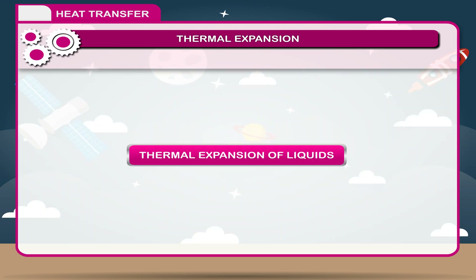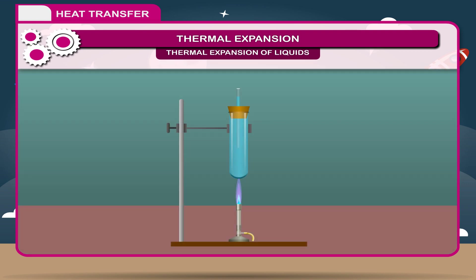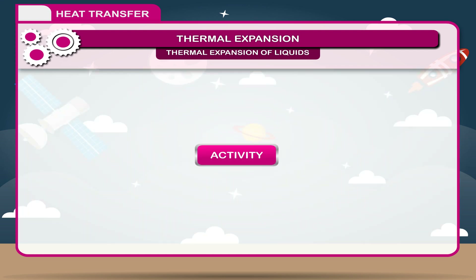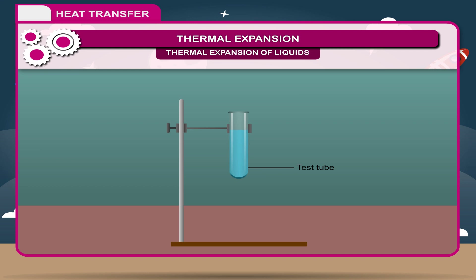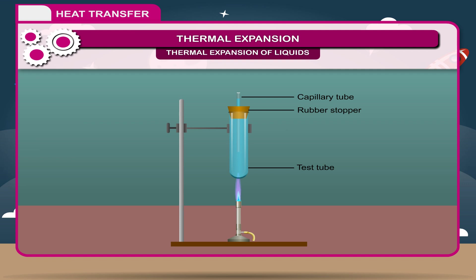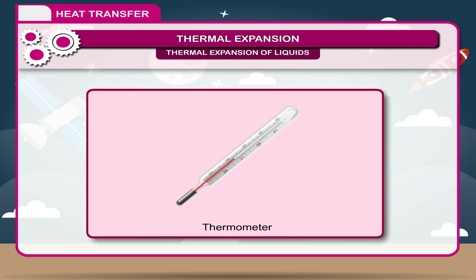Thermal expansion of liquids: Liquids also expand when they are heated. Activity: Take a test tube and fill it to the brim with water. Take a rubber stopper and make a small hole in it. Put it on the mouth of the test tube. Put a small capillary tube through the hole in the cork. Water will rise in it. Now heat the test tube. You will notice that the water will rise further in the tube. This shows that liquid expands on heating. A thermometer is one application of the thermal expansion of liquid.